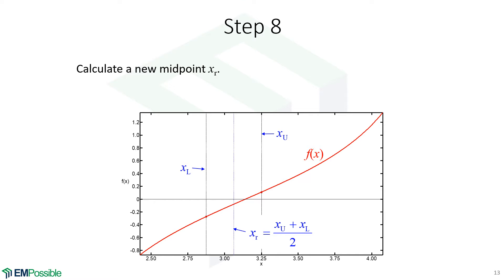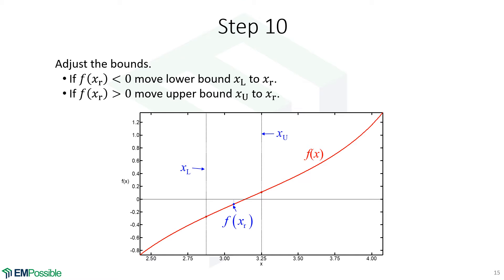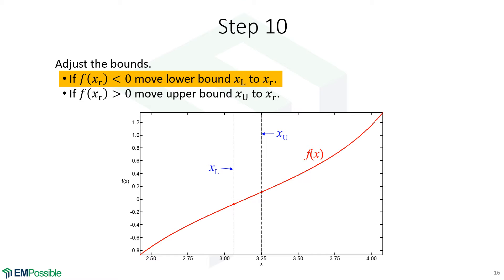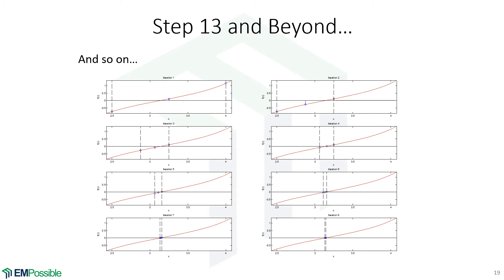We calculate a new midpoint exactly between upper and lower bounds, evaluate the function at that new midpoint, and adjust the bounds by looking at the sign of the function. The function is negative, so the actual root is to the right — we move our lower bound up to where this guess is. We keep repeating: evaluate the new midpoint, evaluate the function, adjust the bounds. This goes on for many iterations — anywhere from 5 or 6 to 50 or 60, depending on tolerance and how the function behaves.